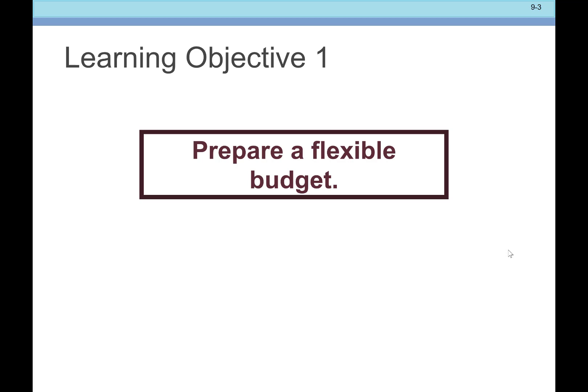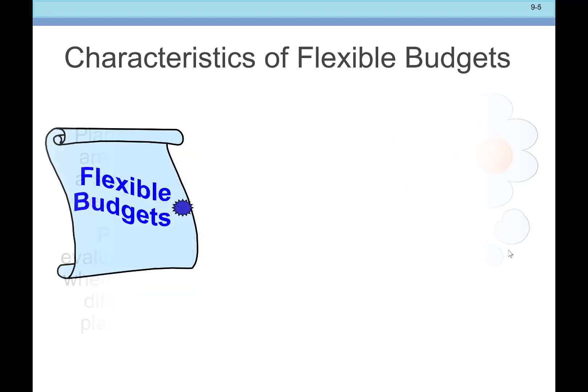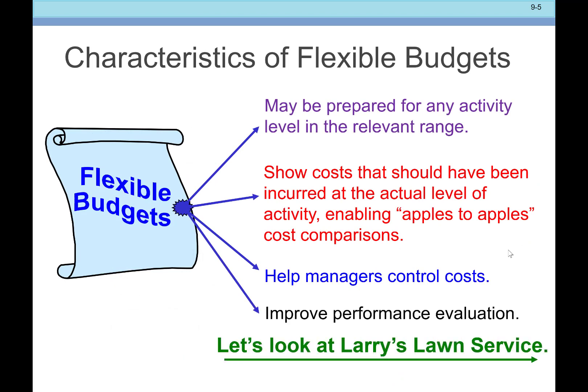We will prepare something called a flexible budget. The reason we need to prepare a flexible budget is because when we prepare our planning budget, we assume a certain level of activity. But the actual level of activity will be different than that planned level. So we'll adjust our budget for the actual level of activity — comparing apples to apples instead of apples to oranges. Flexible budgets allow us to adjust our budget accordingly for different potential levels of activity.